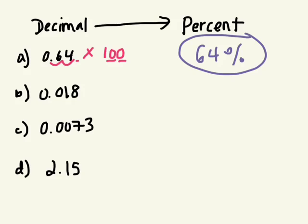Let's try the next one together. So I'm going to move the decimal place two places to the right. One, two. It will end up here. What's the answer? What percentage is this, Carla? Good. 1.8%. Okay, you try the rest of them on your own.